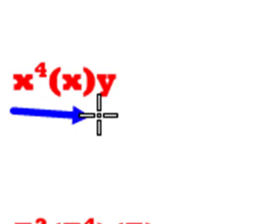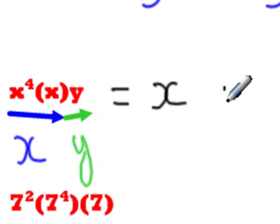Next example: x to the power of 4 multiplied by x multiplied by y. Here we have two different bases. We have one part of the question that has the base x, and we also have another part that has the base y. As a result, our answer will be made up of these two bases, x and y.